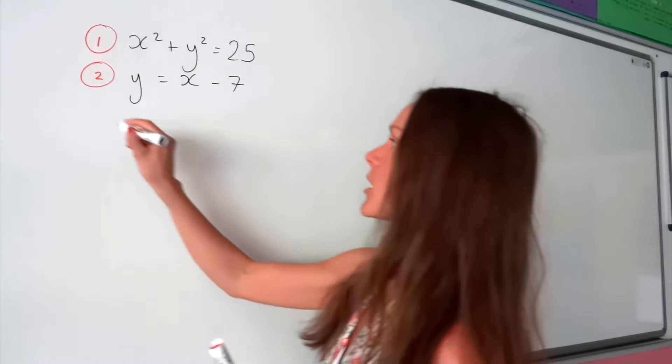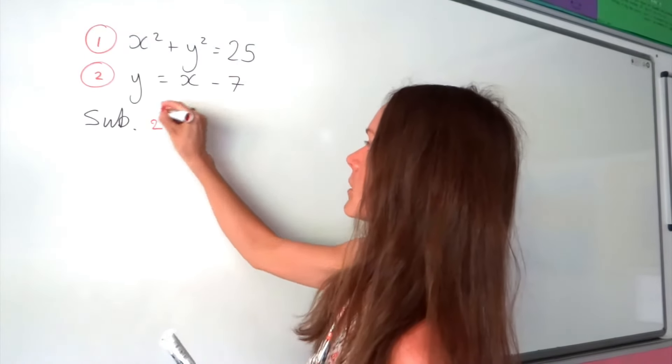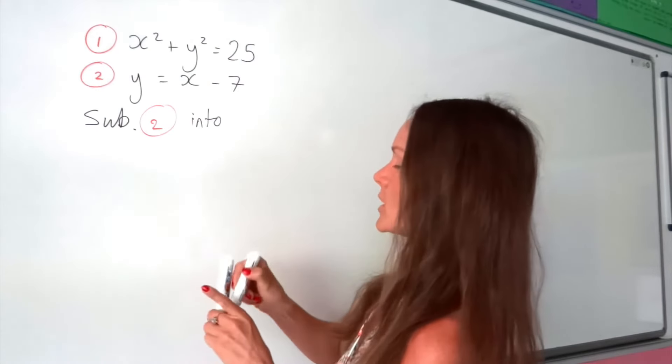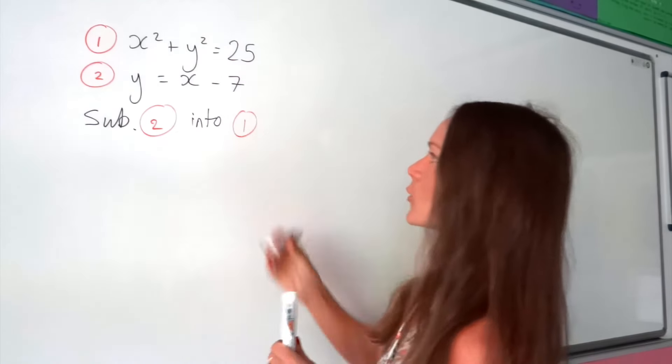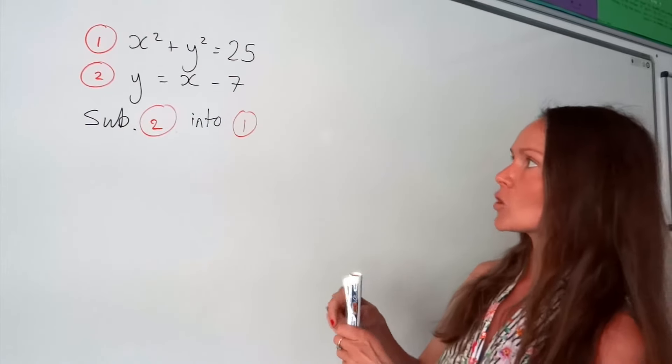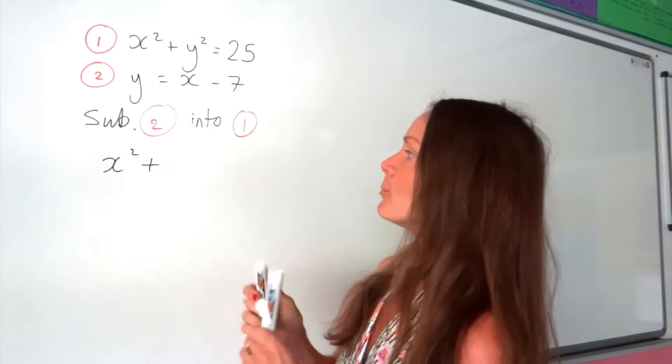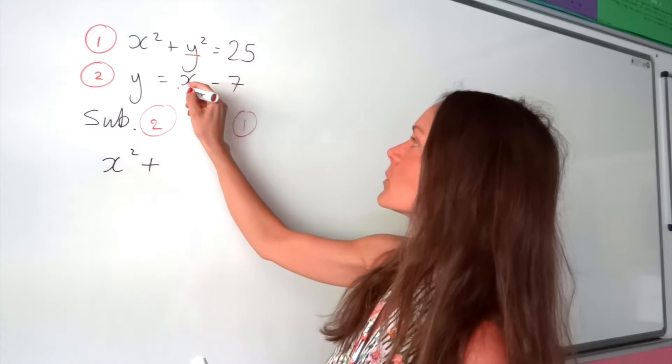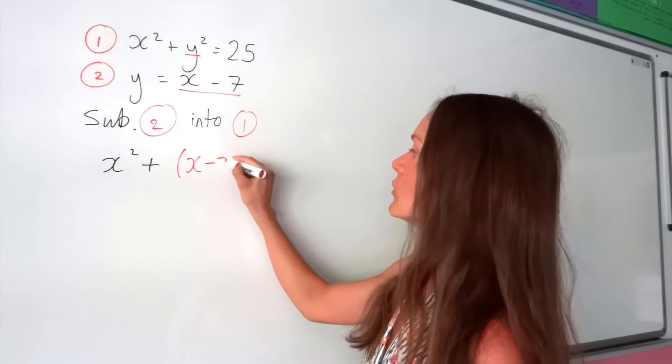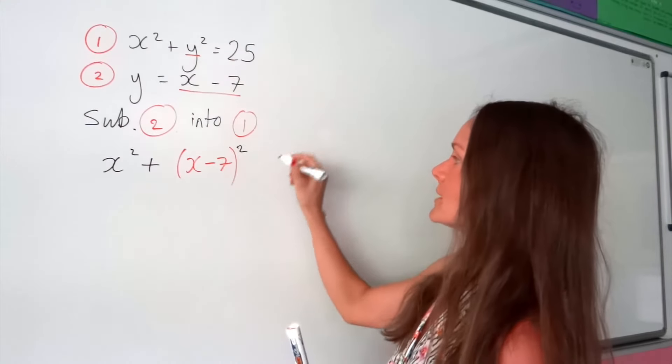So let's do that. I'm going to write substitute equation 2 into equation 1. So we're substituting the linear equation into the quadratic. I'm going to write out that top equation again. So I've got x squared plus, but instead of the y, I'm going to switch that in with x minus 7. So I've got x minus 7, not forgetting the squared up here, equals 25.